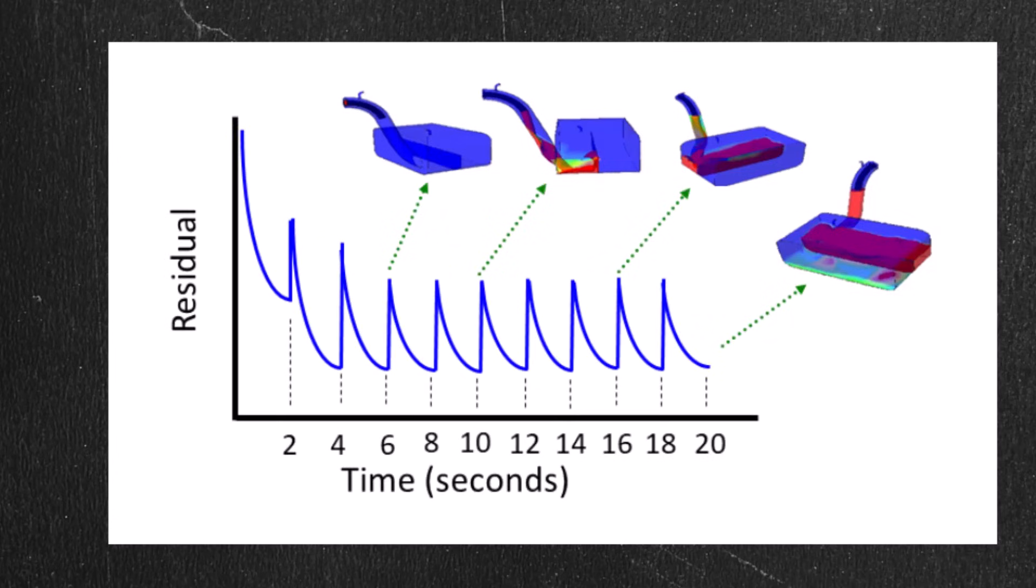Now let's see what a typical residual plot would look like for this simulation. At each point in time, you have to iterate to the solution, and you can see that behavior here. At the beginning of the time step, the residual is high, and then it decreases each iteration until convergence is reached, and then the solution advances to the next time step, and the residuals jump back to a high level. This repeats every time step, resulting in the sawtooth pattern that you see in the plot.